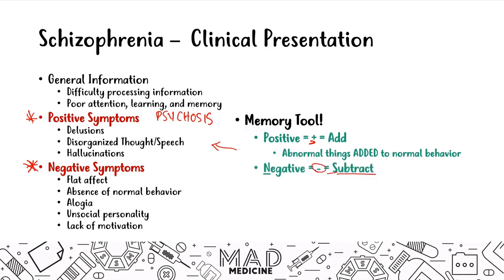In negative symptoms, normal things are subtracted from normal behavior. I think about schizophrenia as a normal person becoming abnormal — either you add abnormal tendencies through positive symptoms, or you take away normal tendencies through negative symptoms. That leaves you with people who have a flat affect, don't talk normally, aren't social, and aren't motivated.